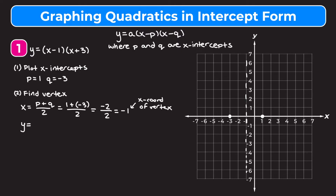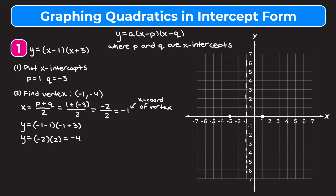We plug in negative one for x, so we have negative one minus one times negative one plus three. Negative one minus one is negative two, negative one plus three is positive two, and negative two times positive two is negative four. So our vertex is the point negative one, comma, negative four. We go ahead and plot that right here.